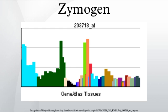The pancreas secretes zymogens partly to prevent the enzymes from digesting proteins in the cells in which they are synthesized.